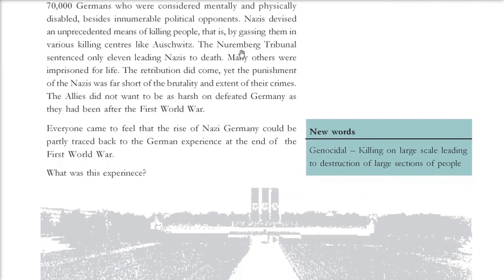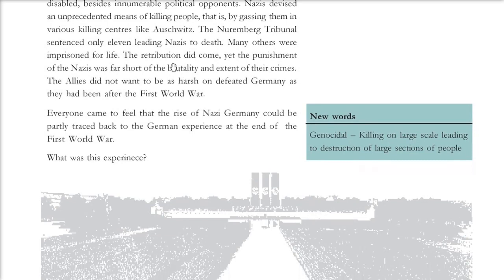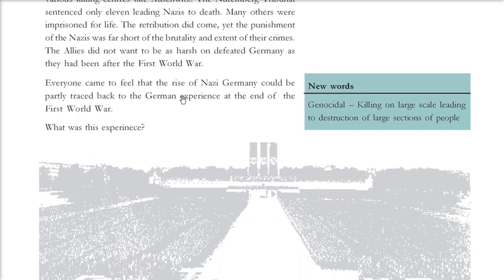The Nuremberg tribunal after the Second World War sentenced only 11 leading Nazis. Others were imprisoned, as the allies did not want to be as harsh on defeated Germany as they had been after the First World War. Everyone came to feel that the rise of Nazi Germany could partly be traced back to the German experience at the end of the First World War. Genocide means the killing of large sections of people belonging to a certain religion, caste, or creed — typically the majority killing minorities.